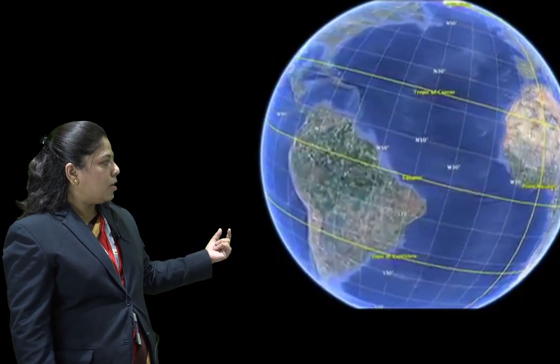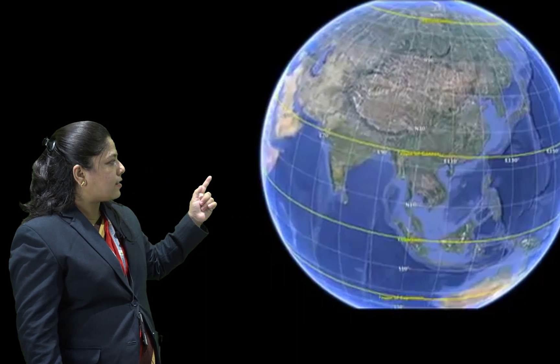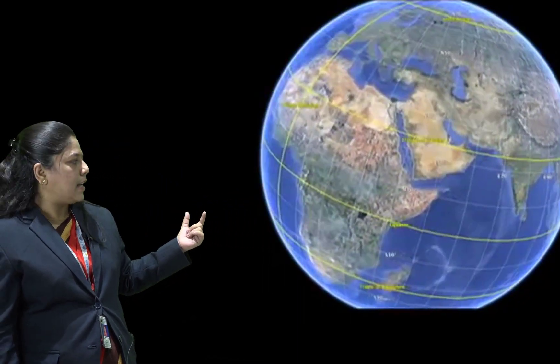Why? Because of the rotation of the Earth. You see how it rotates? It rotates on this axis. That is why there are different dates and times. When the meridian is passed, the date changes.